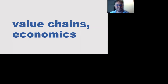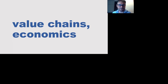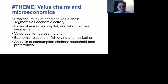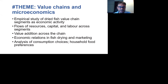Thank you, Derek. Thank you, Eric. This is going to be slightly ad-libbed — I've just arrived from another call, but hopefully it will be interesting anyway. The value chains and microeconomics theme is the second largest theme in terms of number of publications after the technical theme that Derek has just talked about. There are a few elements here: empirical studies of dried fish value chains looking at economic activities, mapping flows of resources, capital, and labor throughout segments, looking at how value is added at different segments, understanding economic relations in fish drying and marketing, and analyzing choices about consumption, consumer preferences.